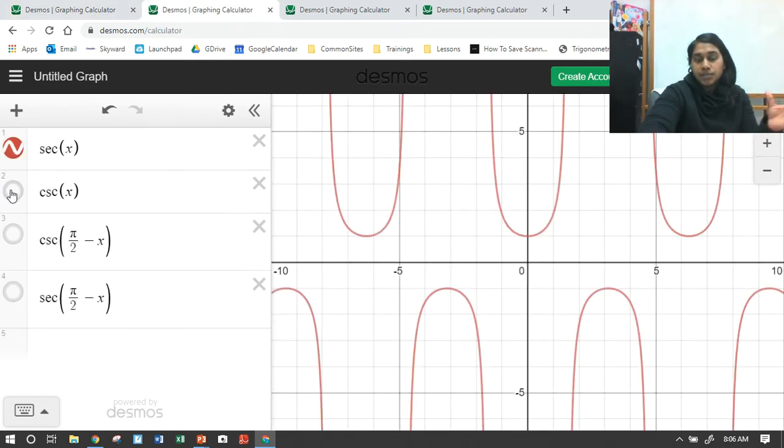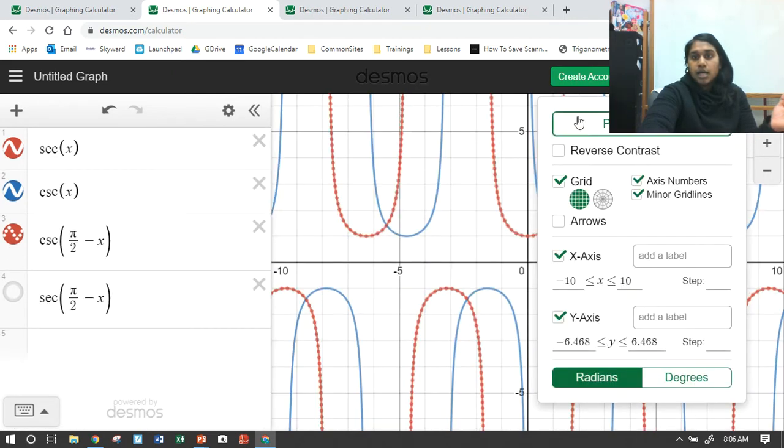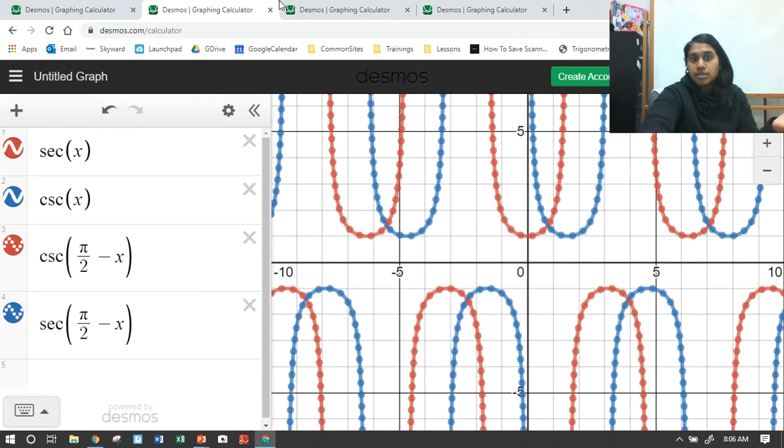Okay? What about secant and cosecant? Here's secant. Here's cosecant. The dots. Let me projector mode this. The dots are putting over the cofunction identity, and then here are your dots.